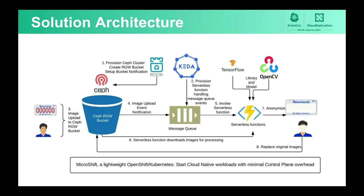KEDA, or Kubernetes event-driven architecture, is lightweight and service provider-oriented. It is very suitable for our use case. The KEDA service functions use machine learning algorithms to detect objects — mostly personal and sensitive information — within the image. We use a HAAR feature classifier from OpenCV and a deep neural network from TensorFlow. When images are uploaded to the RGW bucket, activities are pushed into the message queues, services read the events, download the images, detect regions of interest, and anonymize personal and sensitive information. The anonymized images then replace the originals in the bucket.